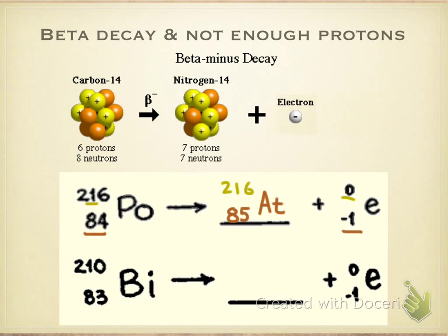All right, so if bismuth undergoes a beta decay, we get an atomic number of 84. That's polonium, PO. But in this case, the isotope here is 210.